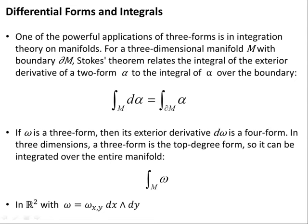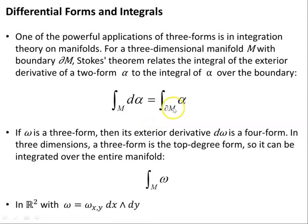One of the powerful applications of three-forms is in integration, which I'll pick up in more detail in later videos. In integration theory on manifolds, for a three-dimensional manifold M with boundary partial M, Stokes' theorem relates the integral of the exterior derivative of a two-form alpha to the integral of alpha over the boundary: the integral of d(alpha) over M equals the integral of alpha over partial M. If omega is a three-form, then its exterior derivative d(omega) is a four-form, covered in the upcoming video on exterior differentiation. In three dimensions, a three-form is a top degree form, so it can be integrated over the entire manifold.